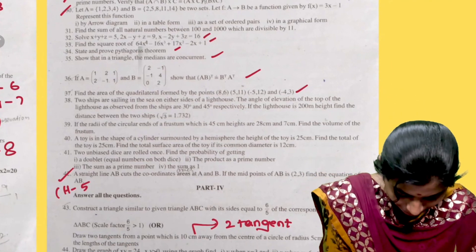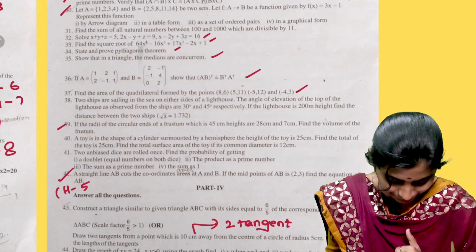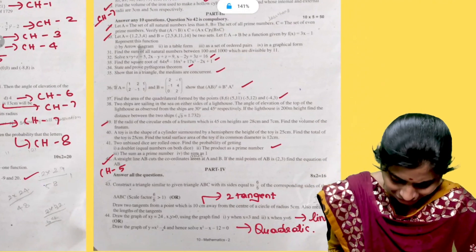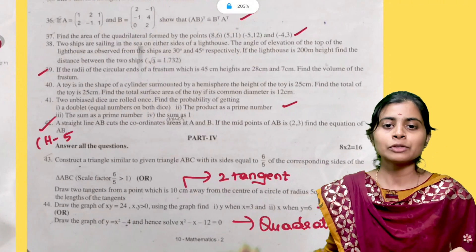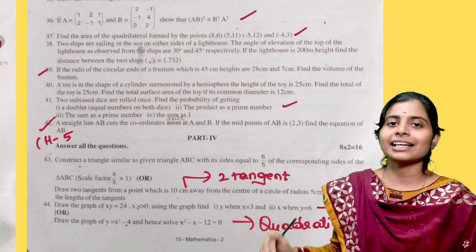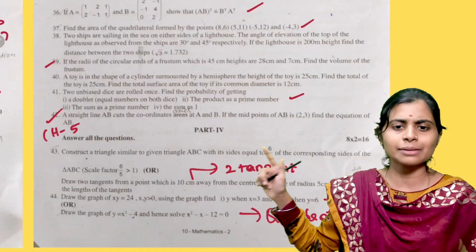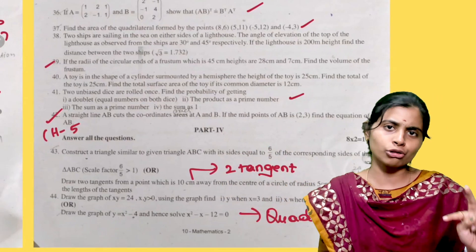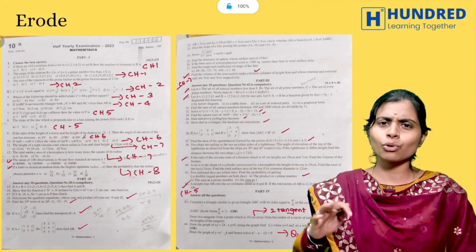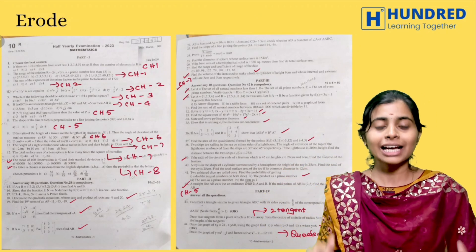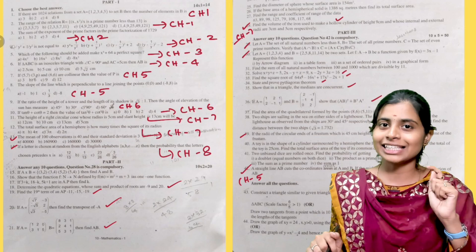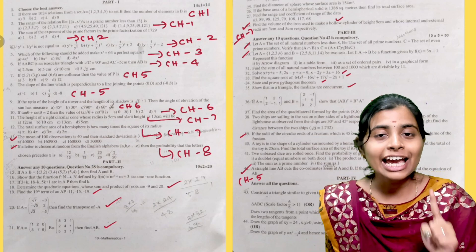I hope in the question paper it will be easy. We will also discuss the radius of the circle and probability — probability is easy. Next, question number 43 is 8 marks. We are going to discuss the two-tangent problem. Practical geometry and ICT — both cover the same concept, which is linear and quadrant.